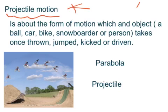The example we've got over here and a bit of a description is that projectile motion is about the form of motion which an object, for example a ball, a car, a bike, snowboarder, a person, something like that that they take once they're thrown, they've jumped off of a ramp, been kicked or driven. So it's pretty much anything that's traveling in the air has got to do with projectile motion.